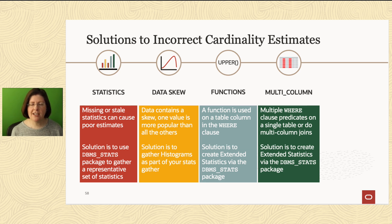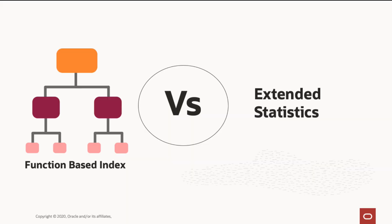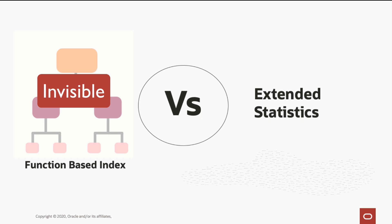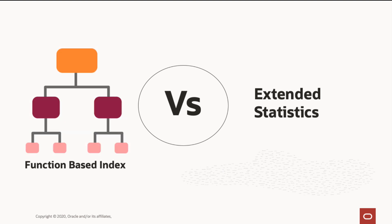One of the most common questions I get is: I have a function-based index — should I drop it and use extended stats instead? My answer is always the same. If the index is never used as an access method and is only there to supply the optimizer with statistics, go ahead and switch to extended stats and mark the index invisible just to be sure no one's using it. As long as no one's plans regress, you can drop the index. But if the index is being used as an access predicate and helping speed up your queries, why not leave it and continue using it for stats? That gives you two ways to solve the same problem.